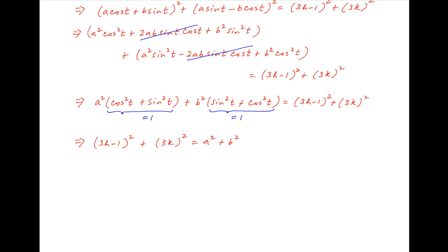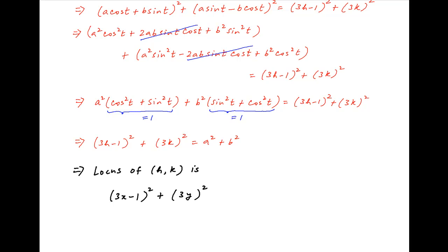Now h and k are the coordinates of the centroid of the triangle. Therefore, the locus of the centroid of this triangle can be obtained by replacing h with x and k with y. So we get (3x − 1)² + (3y)² = a² + b², which is the required answer.